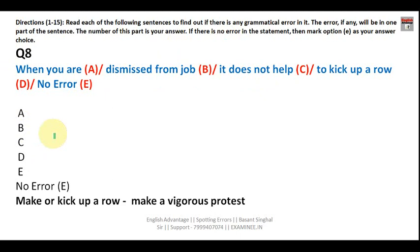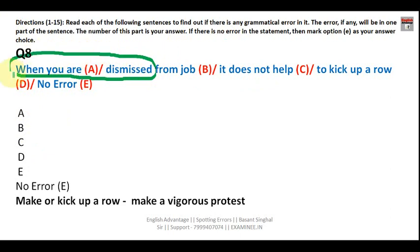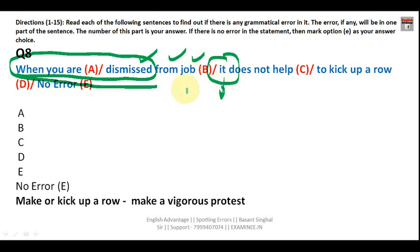Question eight: 'When you are dismissed from job, it doesn't help to kick up a row.' 'To kick up a row' means to make a vigorous protest — that is a correct phrase. 'When you are dismissed' is a correct passive voice construction, since you are always dismissed by someone. 'From job' and 'it doesn't help' are also correct. This sentence has no error. Your answer is E — no error.